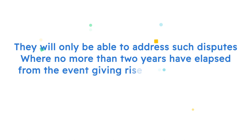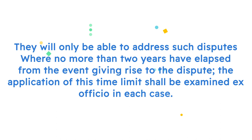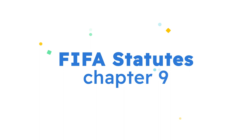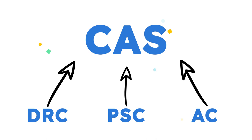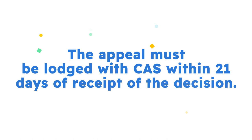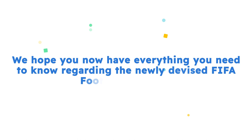All decisions issued by the Football Tribunal chambers — the DRC, PSC or AC — can be appealed to the Court of Arbitration for Sport, known as CAS, in accordance with chapter 9 of the FIFA Statutes. The appeal must be lodged with CAS within 21 days of receipt of the decision. We hope you now have everything you need to know regarding the newly devised FIFA Football Tribunal. If you found this video useful, please consider liking and subscribing for more educational content, and follow the ERC and CERC Academy on other social media platforms.